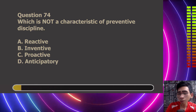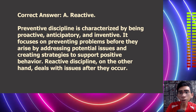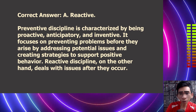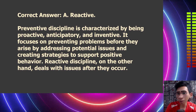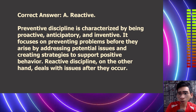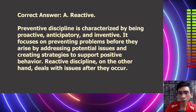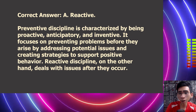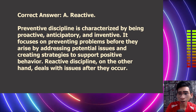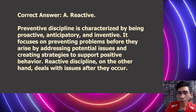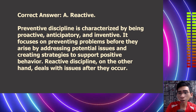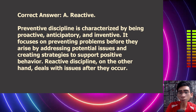The correct answer is Letter A: reactive. Preventive discipline is characterized by being proactive, anticipatory, and inventive. It focuses on preventing problems before they arise by addressing potential issues and creating strategies to support positive behavior. Reactive discipline, on the other hand, deals with issues after they occur.